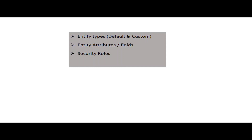After that we covered security roles, because security roles are actually the definitions which are defined in order to make users access a particular entity. There are default security roles and custom security roles which are created by you. There is no need to worry if you are new to these terminologies because I have already uploaded many videos on Dynamics CRM covering these topics in detail. Security roles are the definitions defined in order to link users or teams with them to access any resource or entities.